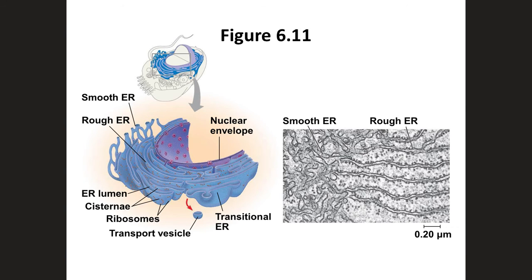Let's take a closer look at the rough endoplasmic reticulum. The rough ER is studded with ribosomes, which are the sites of protein synthesis. Once these proteins are synthesized on ribosomes attached to the rough endoplasmic reticulum, they are exported from the cell, sent to lysosomes, or even the plasma membrane.